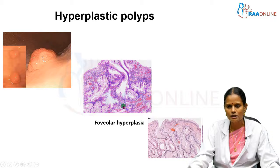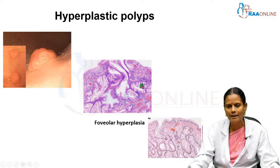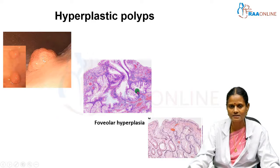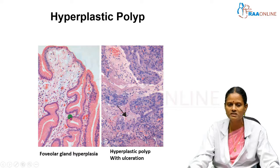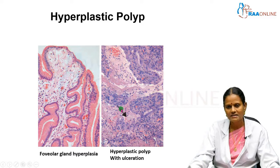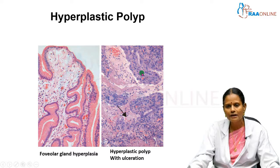Microscopic images show foveolar gland hyperplasia, which is very characteristic of hyperplastic polyps. Another picture shows foveolar gland hyperplasia, which sometimes gives the appearance of a corkscrew pattern. Here is a hyperplastic polyp with ulceration and inflammatory infiltrate.